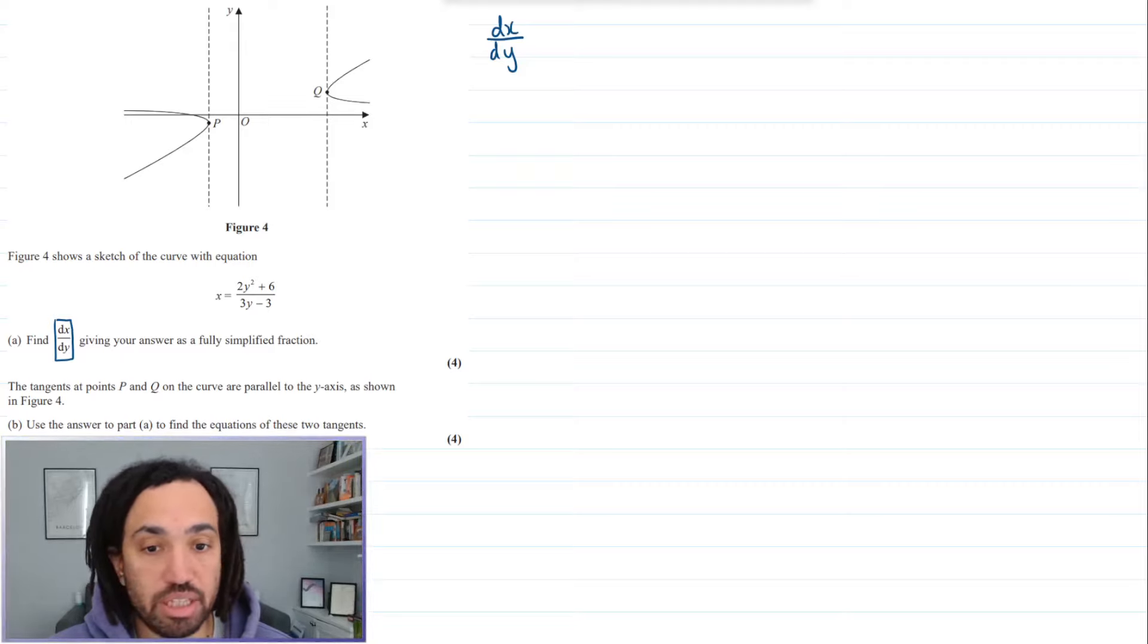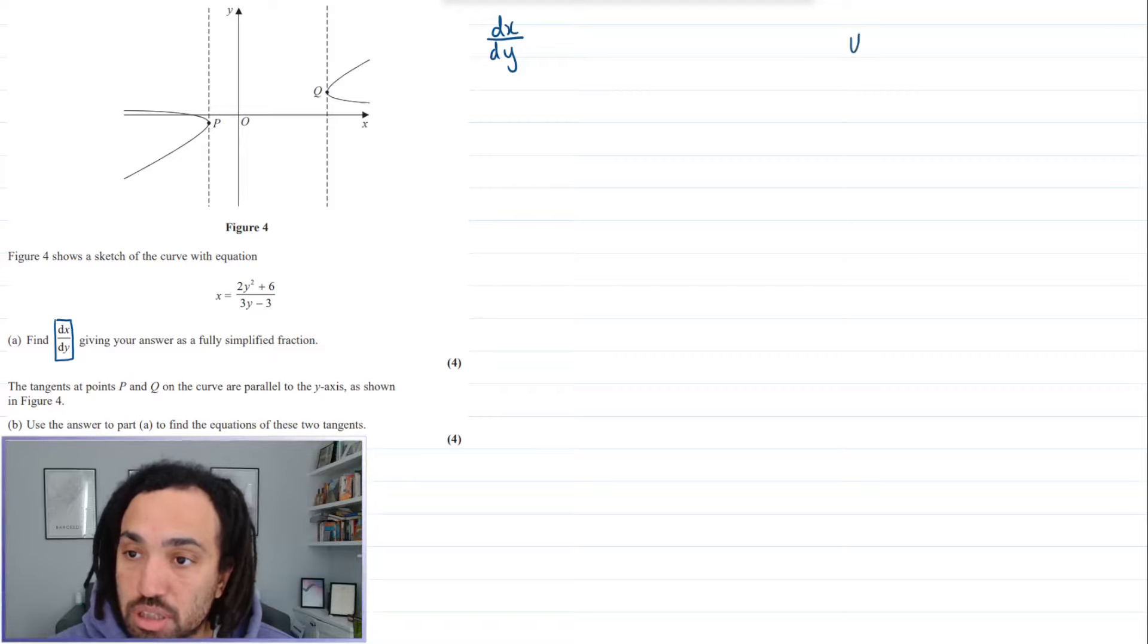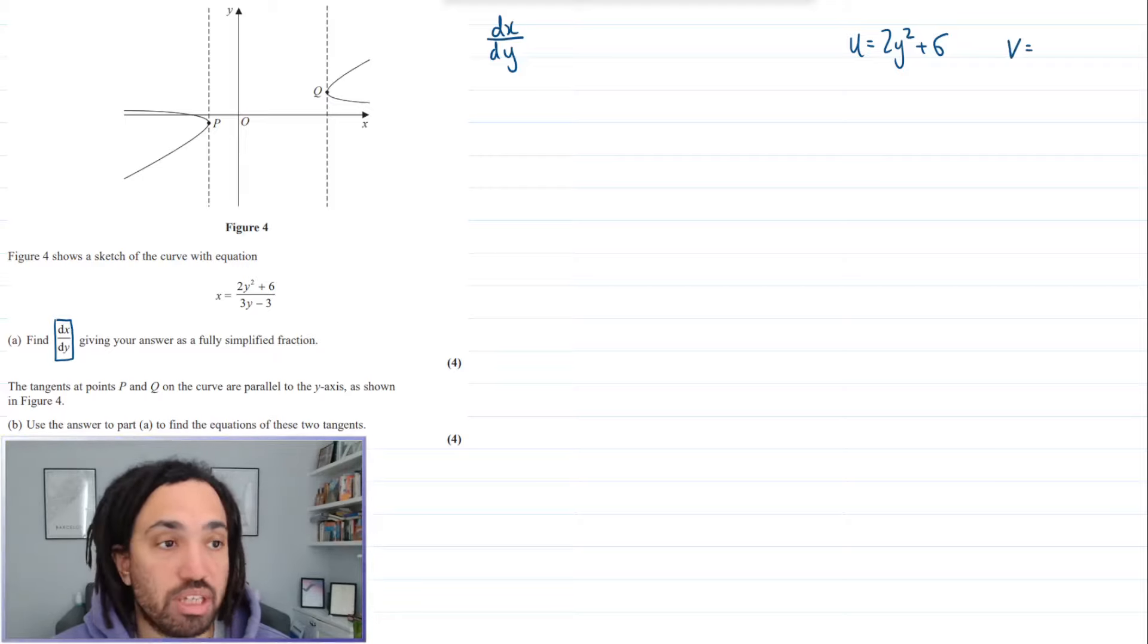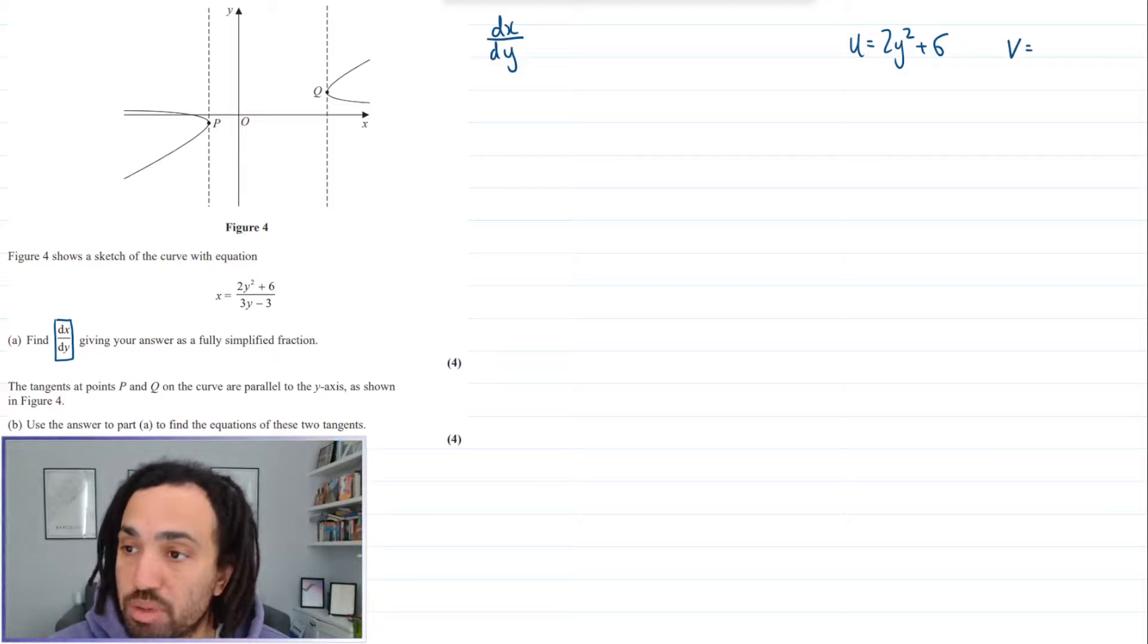Now this is going to need the old quotient rule. So the u variable is the one on top, so that is 2y squared plus 6, and the v variable is the one on the bottom which is 3y minus 3.